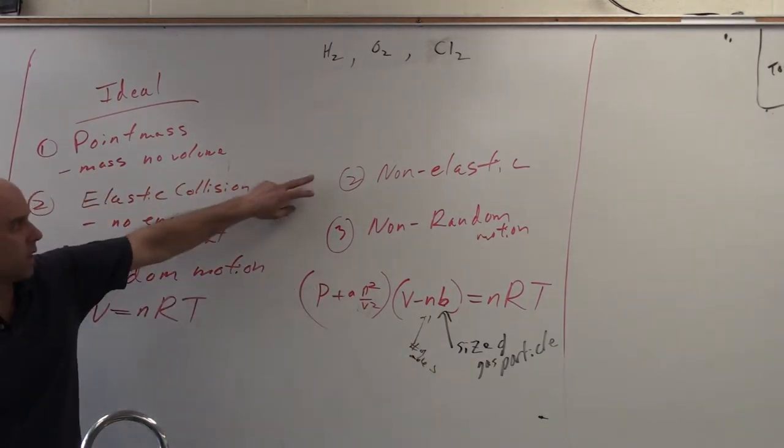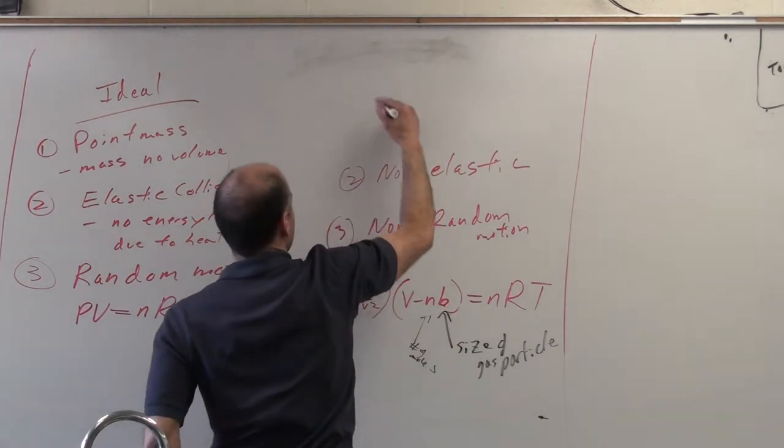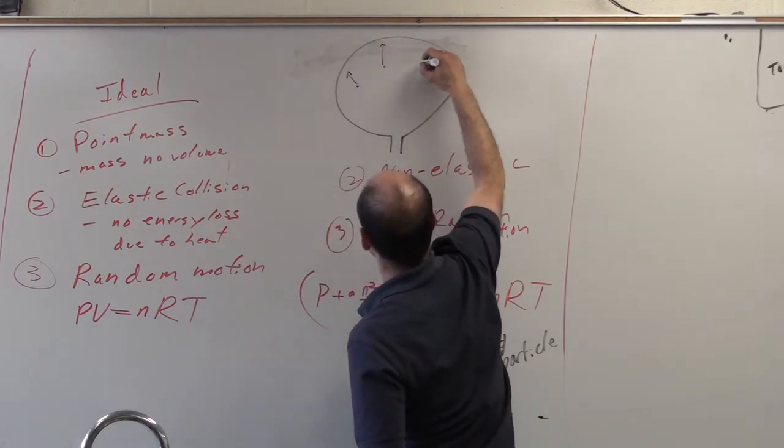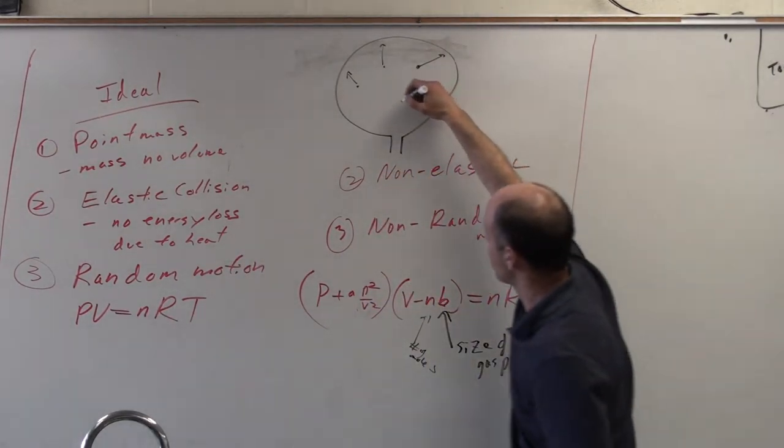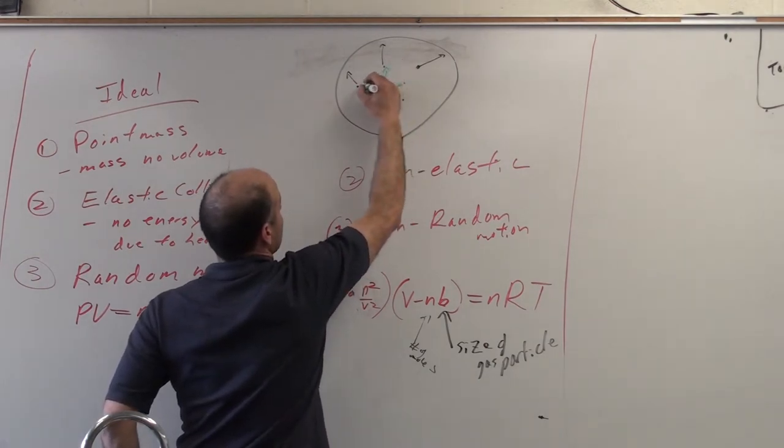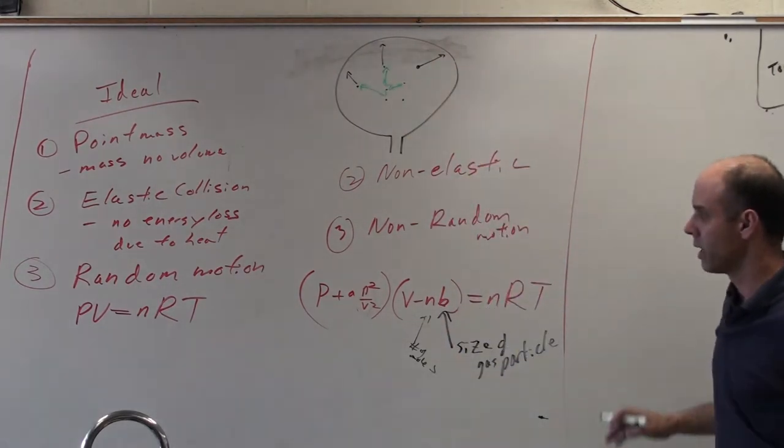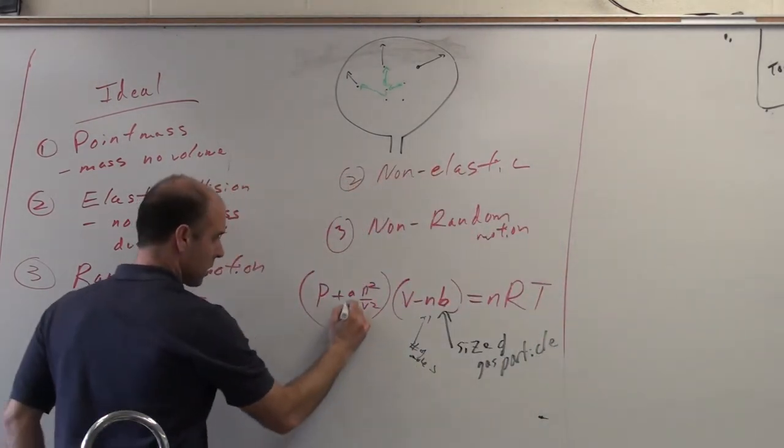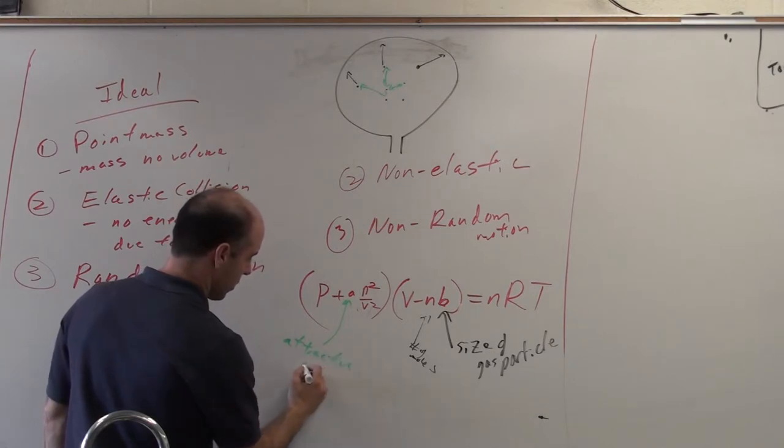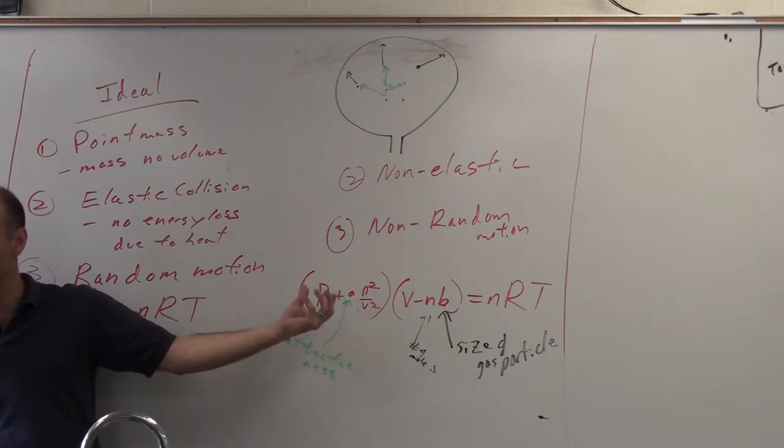A has to do with the fact that the collisions aren't elastic, and that the motion isn't random. And it has to do with how pressure is created. When a gas particle strikes the side of a container, that's how pressure is created. But if the gas particles are more attracted to each other, they're not going to hit the balloon, or whatever, the wall of your container with as much force. So, that's going to affect the pressure. So, A basically, is for the attractiveness of the gas. How attracted are they to each other. And then, the N²/V², that has to do with the concentration.